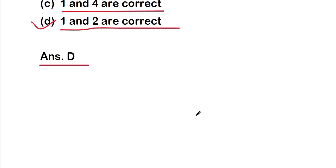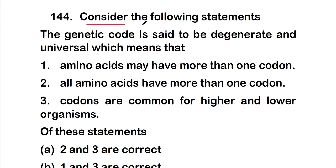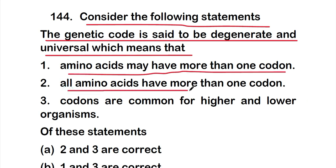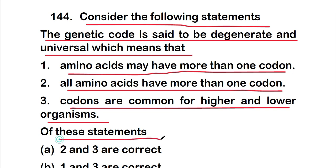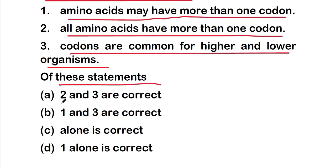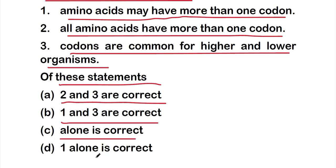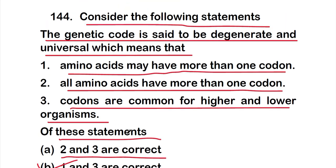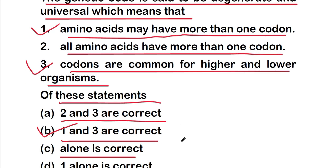Question 144: The genetic code is said to be degenerate and universal, which means — (1) an amino acid may have more than one codon; (2) all amino acids have more than one codon; (3) codons are common for higher and lower organisms. Which option is correct? Option A: 2 and 3; option B: 1 and 3; option C: 2 alone; option D: 1 alone. The correct answer is option B — statements 1 and 3 are correct about the genetic code.